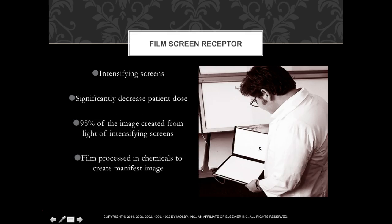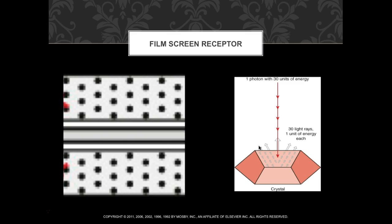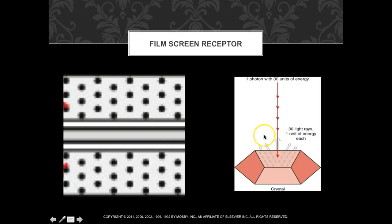Intensifying screens decrease patient dose — 95% of the image is created from light from the intensifying screens exposing the film. The film must be processed through a chemical processor to convert the latent image into a manifested image that we can actually see. One photon hitting a PSP crystal produces 30 units of light.